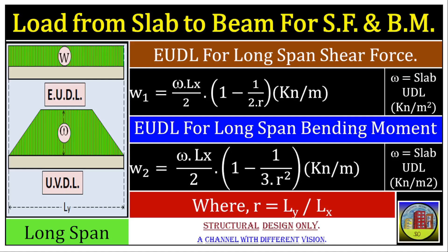The equations here provide formulas for calculating EUDL for both shear force and bending moment. EUDL for shear force: W1 equals 2 × omega × LX divided by 2, multiplied by (1 minus 1 divided by 2R), in kN per meter. EUDL for bending moment: W2 equals 2 × omega × LX divided by 2, multiplied by (1 minus 1 divided by 3R²), in kN per meter.